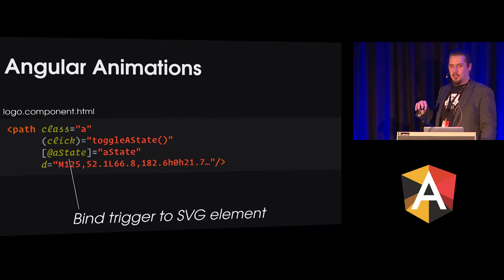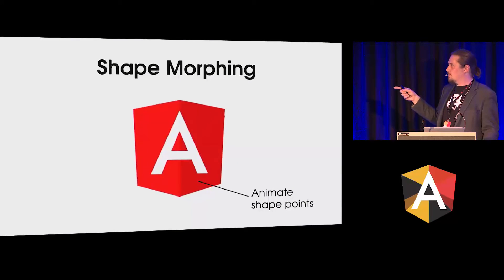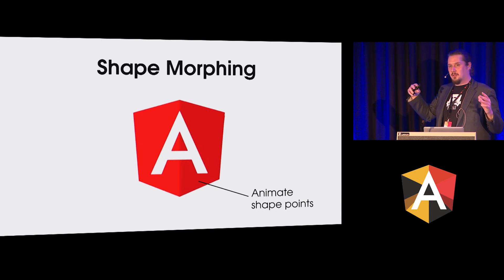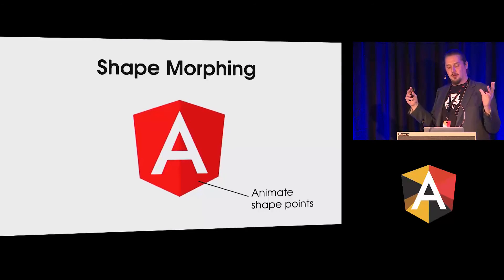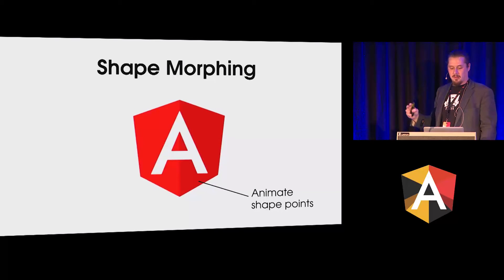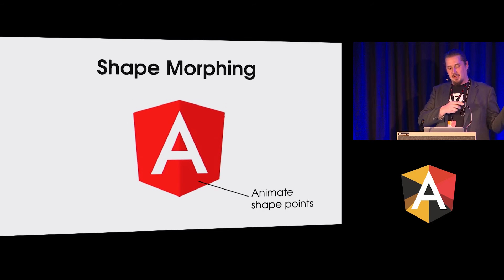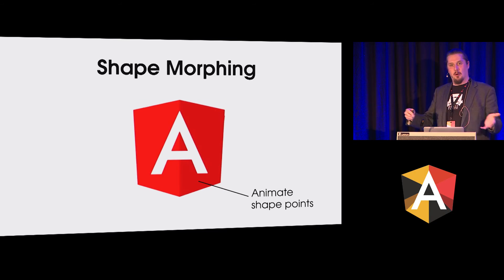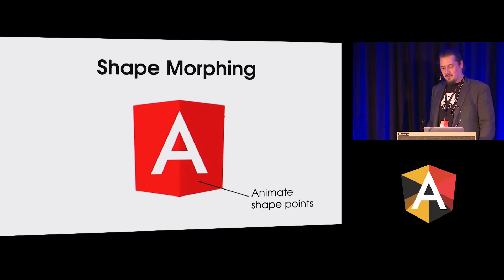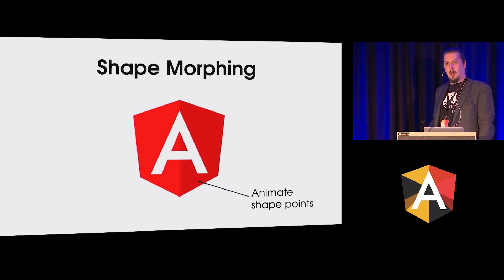This still has an issue — we still can't do things like shape morphing animation, where you change the points of polygons and animate between two different sets of points. This is something you can do with SMIL but not with CSS or Web Animations. So we're in an unfortunate situation where the deprecated standard can do more than the non-deprecated ones, but that's just the way it is.